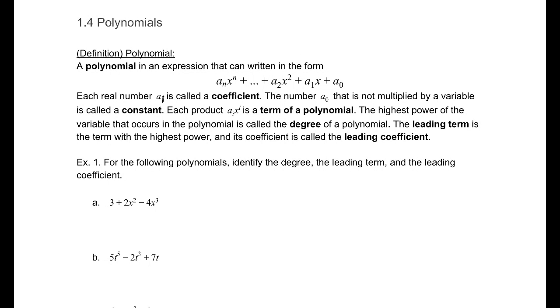1.4, Polynomials. For our definition of a polynomial, we have an expression that can be written in the form a_n times x to the n plus a_{n-1} times x to the n-1, all the way down to a_2 x squared plus a_1 x plus a_0.